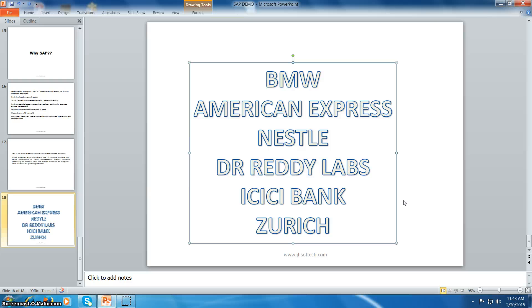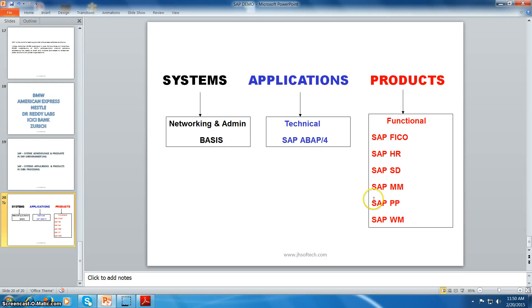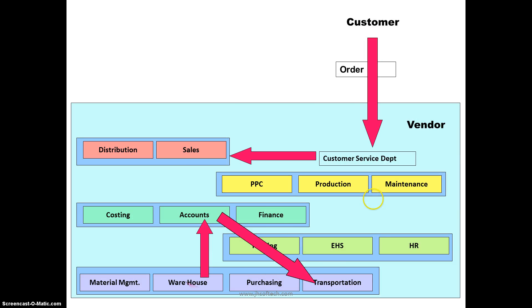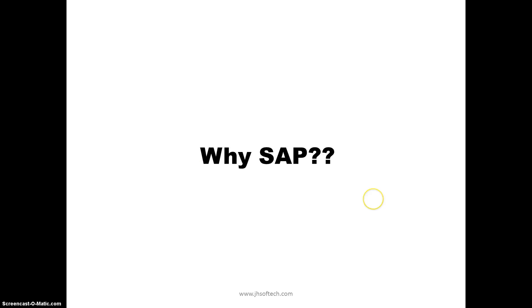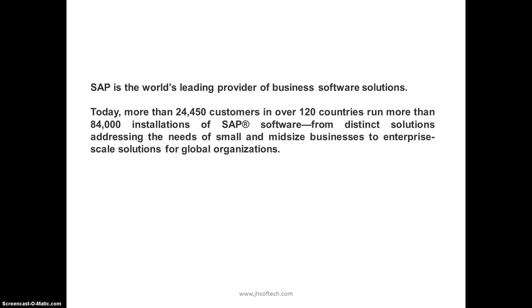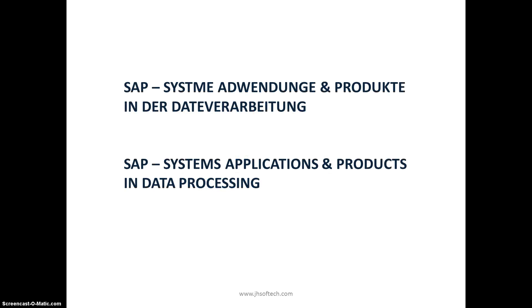SAP stands for Systeme, Anwendungen, und Produkte in der Datenverarbeitung in German, which translates to Systems, Applications, and Products in Data Processing in English. It was initially started in German language, and after early success in Germany, SAP entered the global market and adopted English.